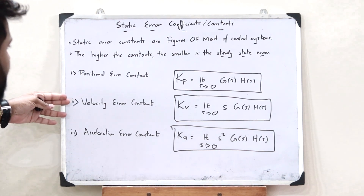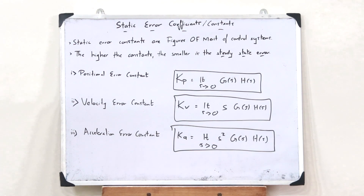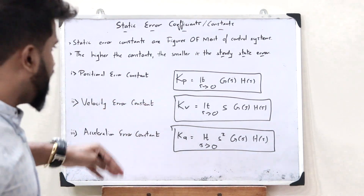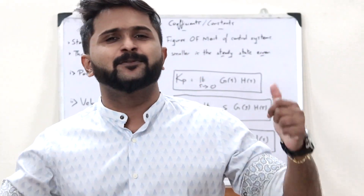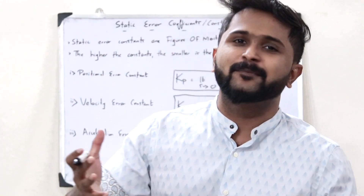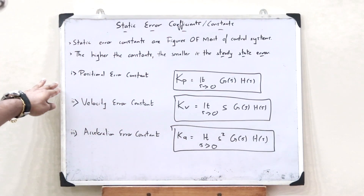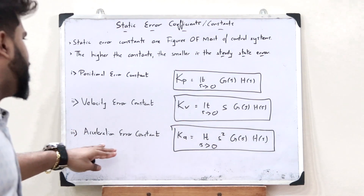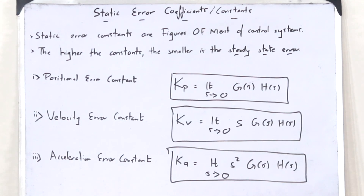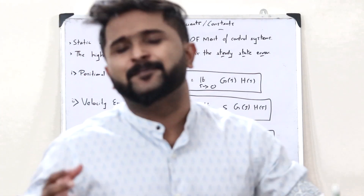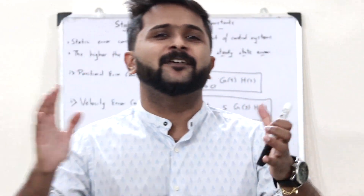These are the three static error coefficients or static error constants in the case of a particular control system. We need to know these three static error constants because in the upcoming topics we will be using them a lot. That is why we must know what we refer to as the three main static error constants: the positional error constant, the velocity error constant, and the acceleration error constant.